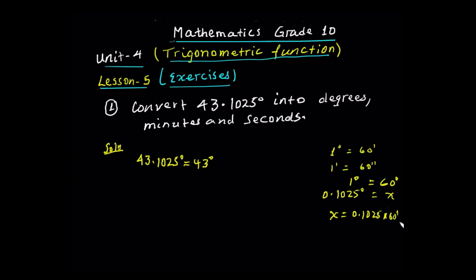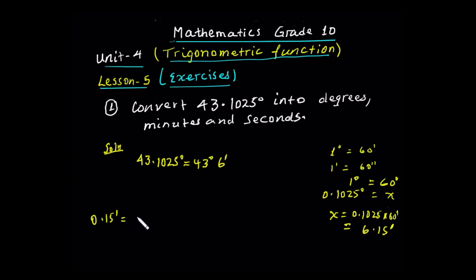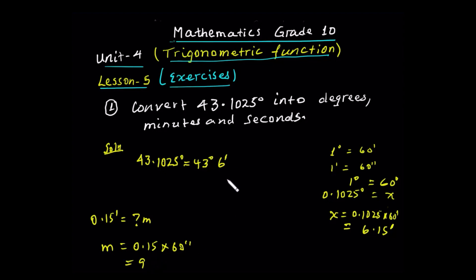So every time we multiply, we get 6 minutes and a fraction. The fraction of a minute is 0.15. So let's see — 0.15 minutes is equal to how many seconds? m is equal to 0.15 times 60 seconds.